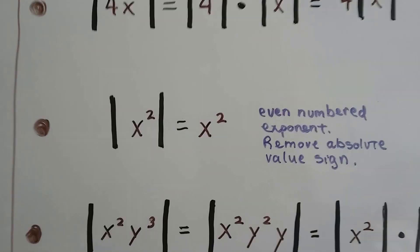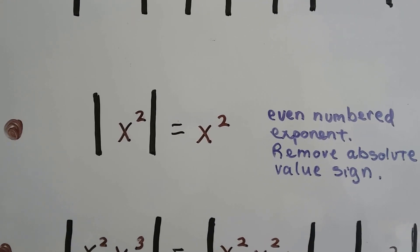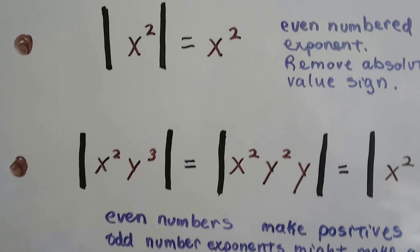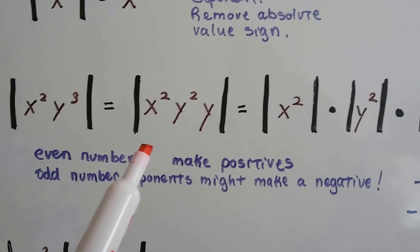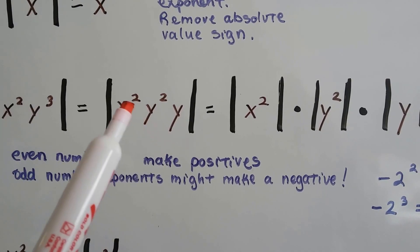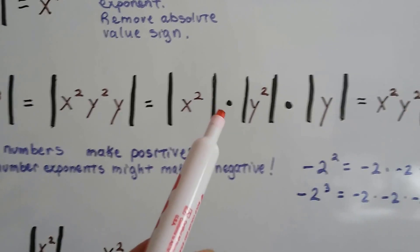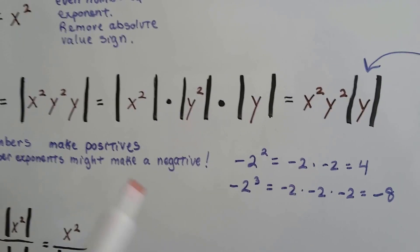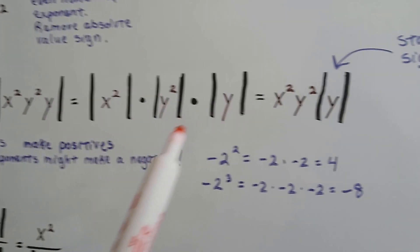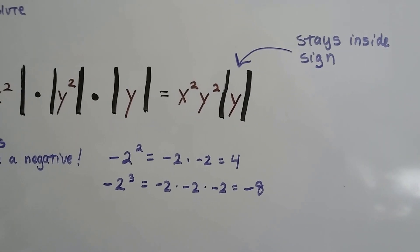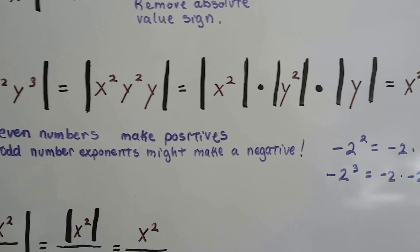Now look at the absolute value of x squared. That little 2 is an even exponent, so we can just remove the absolute value signs — the absolute value of x squared is x squared. Now look at one with an even and an odd: the absolute value of x squared times y cubed equals the absolute value of x squared times y squared times y. We can pull out those even exponents, but the remaining y stays on its own. It simplifies to x squared times y squared times the absolute value of y, because that last y has an exponent of 1, which is odd, and has to stay inside the absolute value bars.